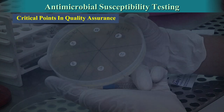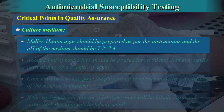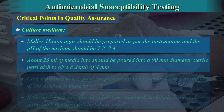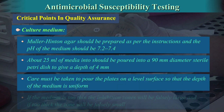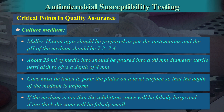Critical points in quality assurance: Mueller-Hinton agar should be prepared as per the manufacturer's instructions and the pH of the medium should be 7.2 to 7.4. About 25 ml of media should be poured into a 90 mm diameter sterile Petri dish to give a depth of 4 mm. Care must be taken to pour the plates on a level surface so that the depth of the medium is uniform. If the medium is too thin, the inhibition zones will be falsely large; if too thick, the zones will be falsely small.